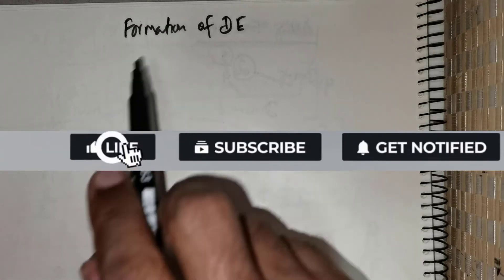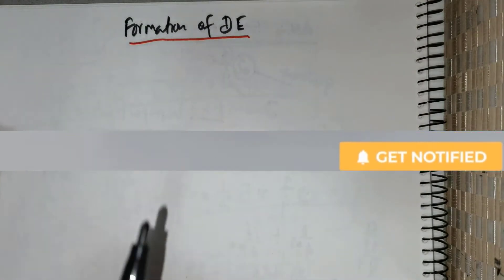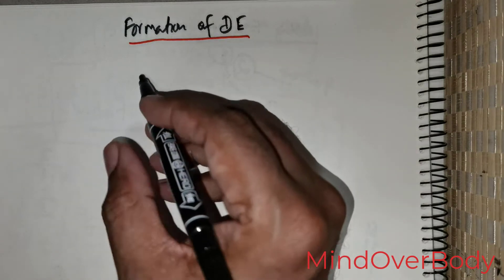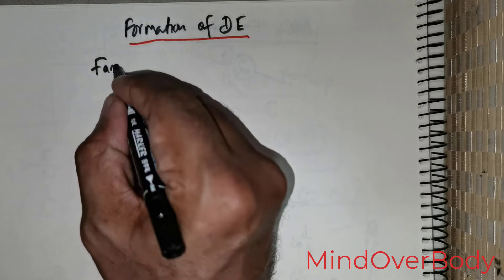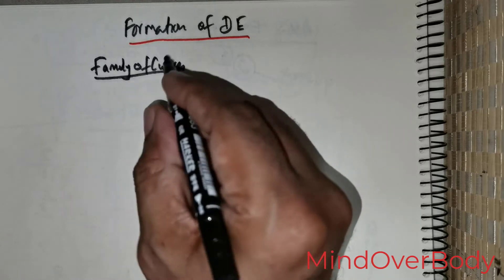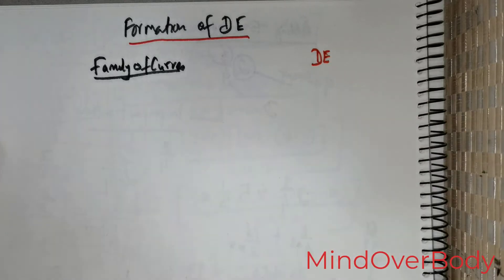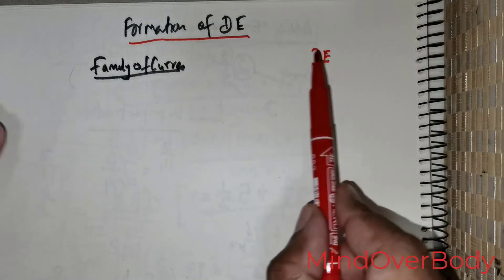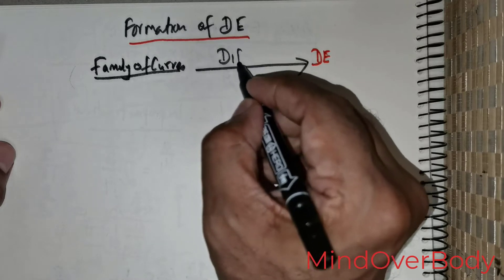Welcome students. In this class we will be learning about formation of differential equations. It is a very important topic. The first and foremost question is: how and when do we come across forming a differential equation? This happens when you are given a family of curves, and from the family of curves you are asked to obtain a differential equation. Between the family of curves and forming a differential equation, there is a process which we call differentiation.